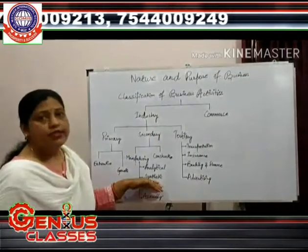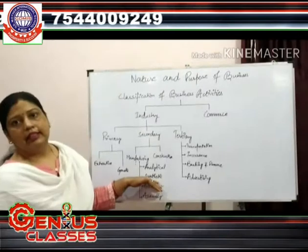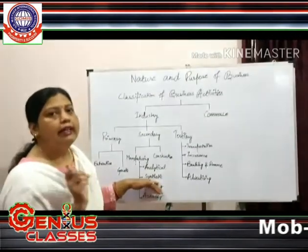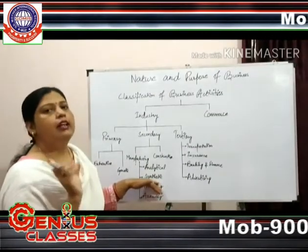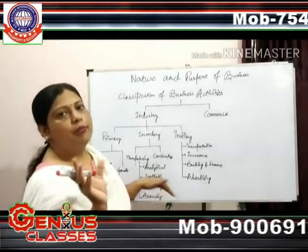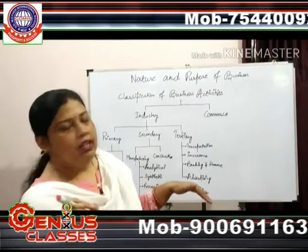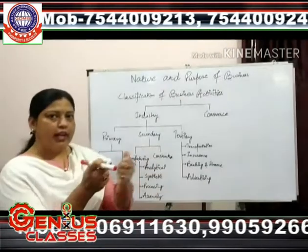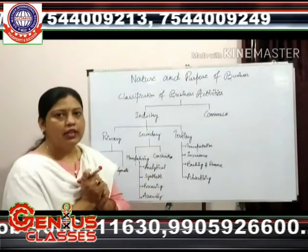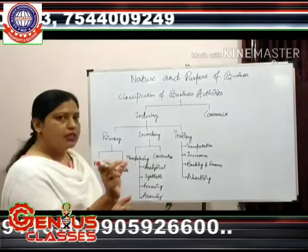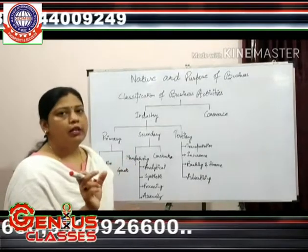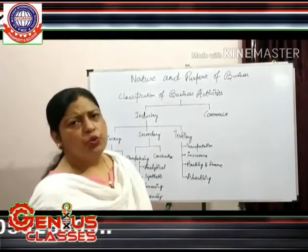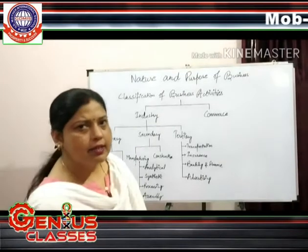For synthetic industry, when two or more products are combined, one new product is formed. The finished products are made from combining different chemicals. Examples include cosmetics and paints.